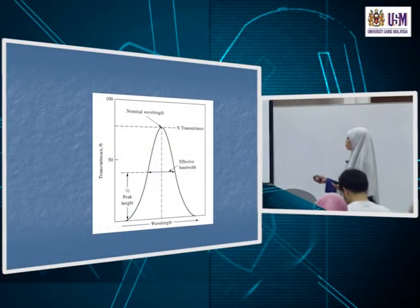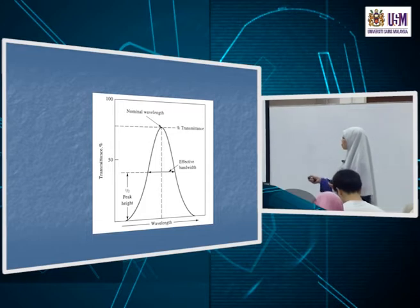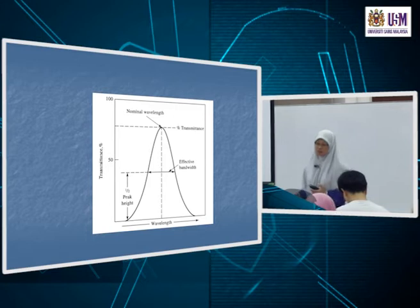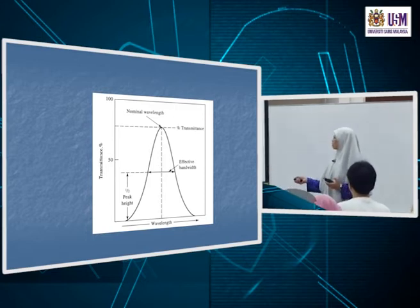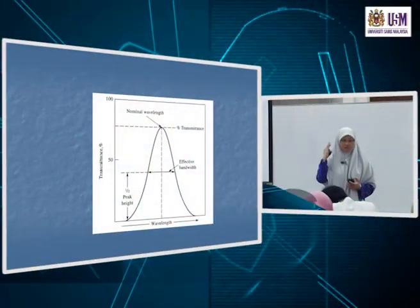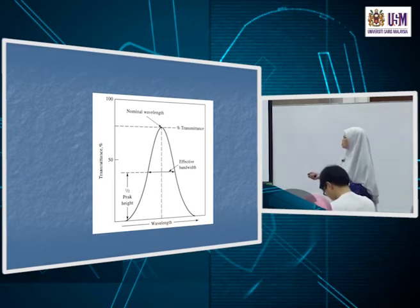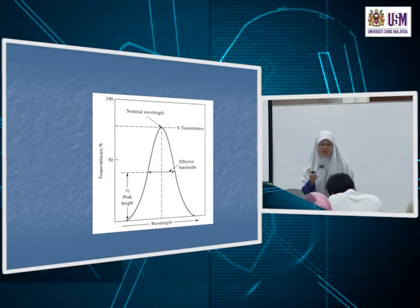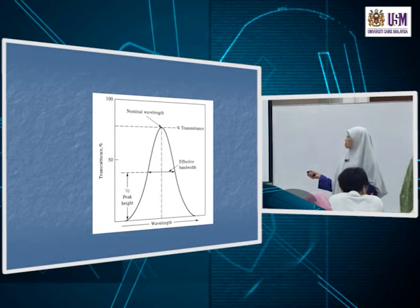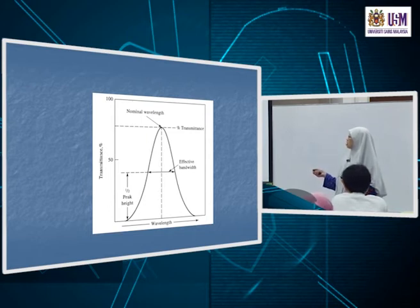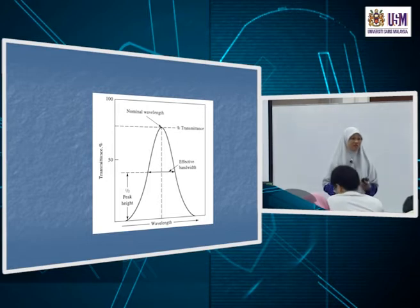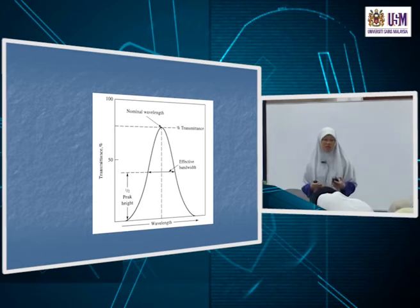How do we look at the spectral bandwidth? We look at the effective bandwidth — the range of wavelengths at half the maximum peak height. You never get a single wavelength coming out. That is the ideal situation, but it does not happen in real life. You get maximum transmittance at the chosen wavelength, but you also get a range of wavelengths.